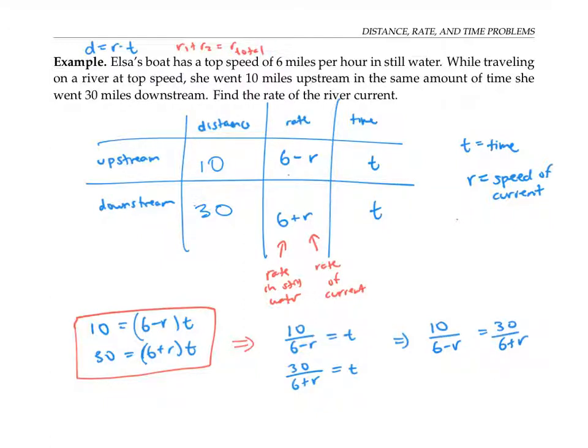I'm making progress, because now I have a single equation, the single variable that I need to solve. Since the variable r is trapped in the denominator, I'm going to proceed by clearing the denominator. So I'm going to multiply both sides by the least common denominator, that is six minus r times six plus r.